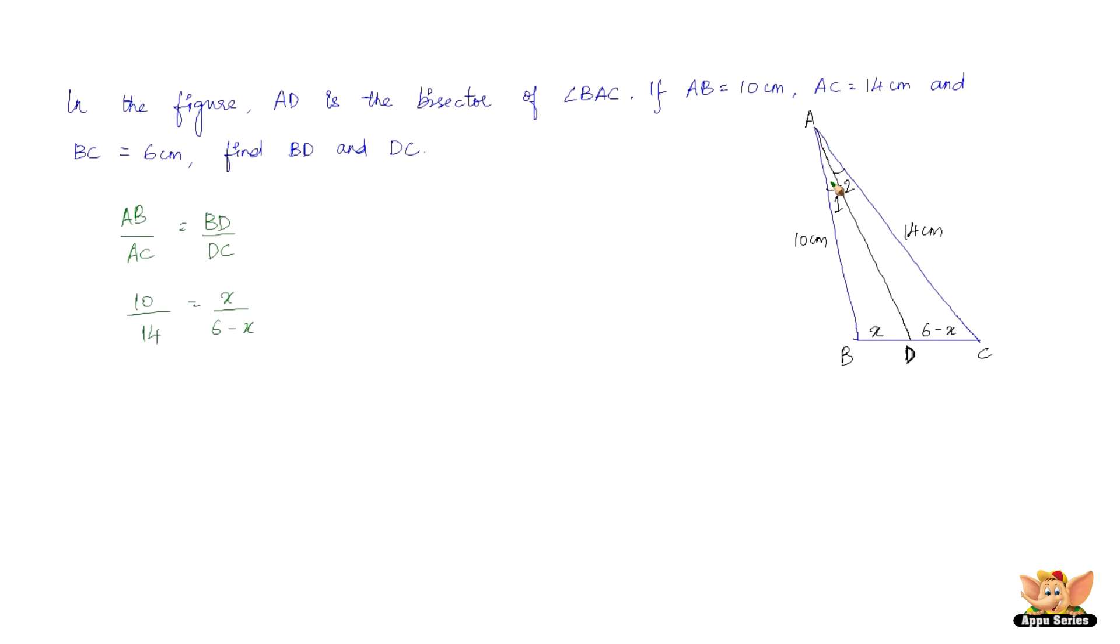The whole problem was about coming to this equation and that equation can be arrived at by knowing this concept. That is the line that bisects an angle in a triangle divides the opposite side of that angle in the ratio of the other two sides containing the angle. All you need to do is just solve this equation and find X.